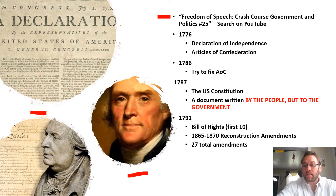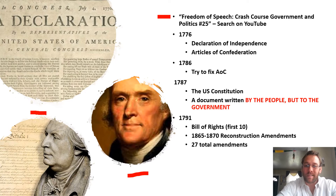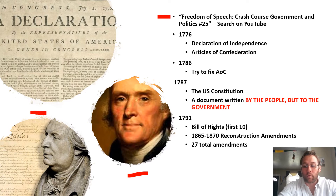The Constitution was passed in 1787. Then in 1791, the first 10 amendments were implemented, known as the Bill of Rights. We'll go over a few of those momentarily.